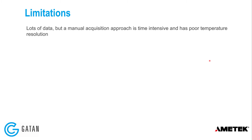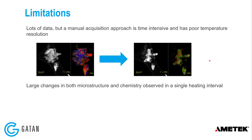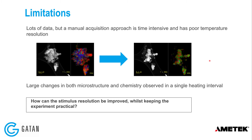While a lot of information and data was obtained, the manual acquisition approach is time-intensive and has poor temperature resolution. Many changes in microstructure and chemistry all appear to happen between 350 and 400 Celsius, raising the question of how stimulus resolution can be improved while keeping the experiment practical.